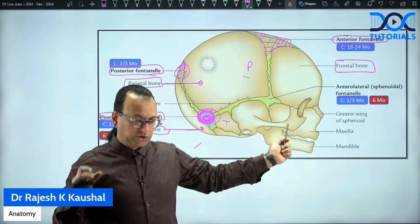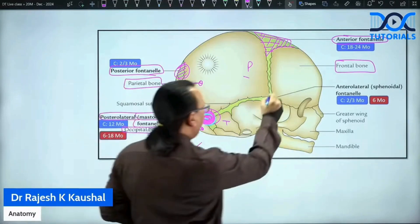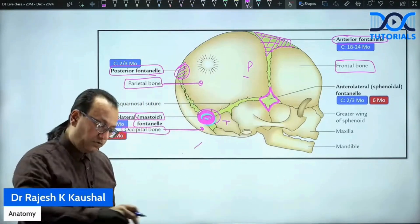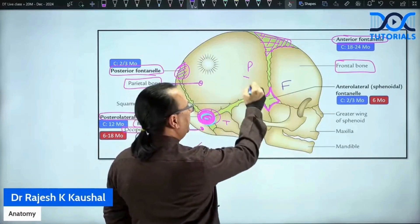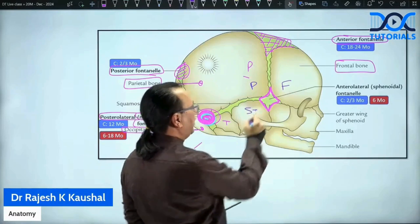Then there is this one, which we are focusing upon, anterolateral fontanelle. Now, anterolateral fontanelle, as we are looking at that, what are the four bones? That is the point we were asked. As you can see on the front, we have frontal bone, posterior superiorly parietal bone, then posterior inferiorly, the squamous part of temporal bone.